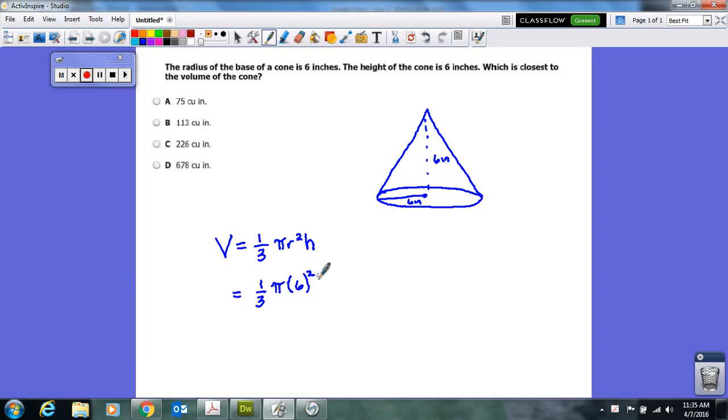Well, they told us the height was six, so I'm going to multiply by six. And that kind of gets my setup complete. Now I need to actually carry out the operation since all of these things are simply being multiplied together.